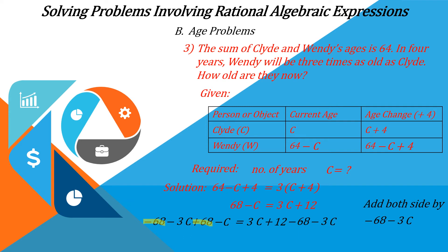And on the right-hand side of the equation, we can cancel 3C and minus 3C. And the remaining terms of our equation is negative 3C minus C is equal to positive 12 minus 68.